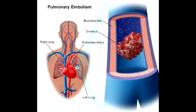Name some types of pulmonary embolism. Pulmonary embolism can be caused by fat, air, thrombus, bacteria, amniotic fluid, and tumor.